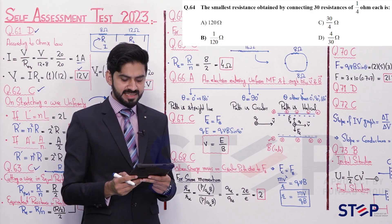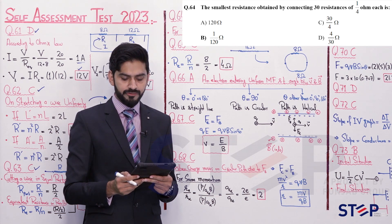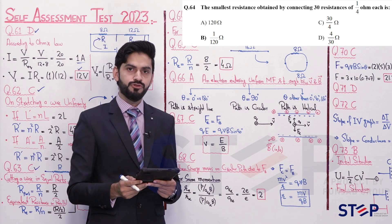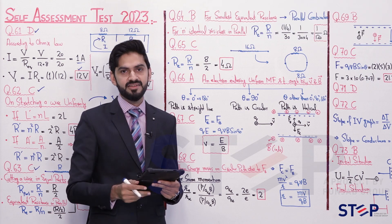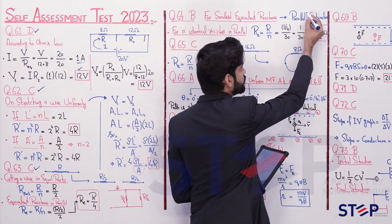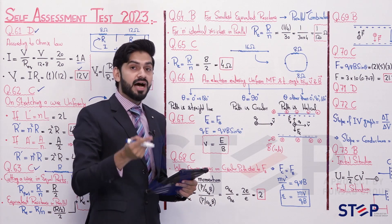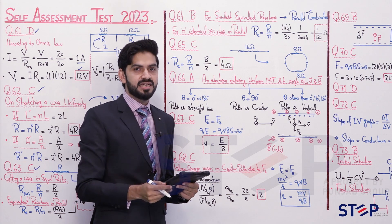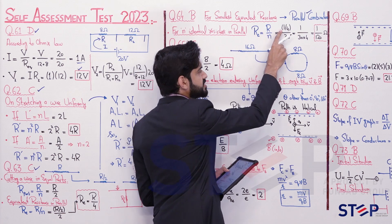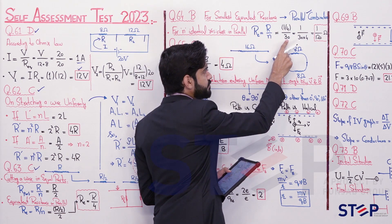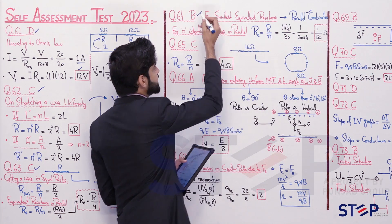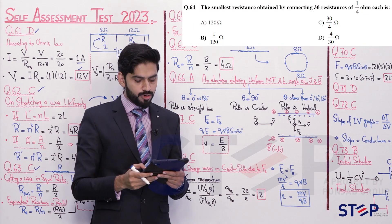Question 64: The smallest resistance obtained by connecting 30 resistances of 1/4 ohm each. To get the smallest equivalent resistance, connect all resistors in parallel. For n identical resistors in parallel: R_eq = R/n = (1/4) / 30 = 1/120 ohm. So the answer is 1/120 ohm — option B.